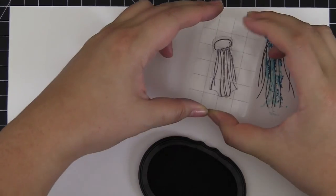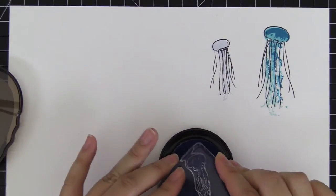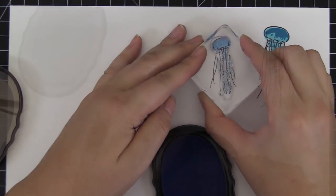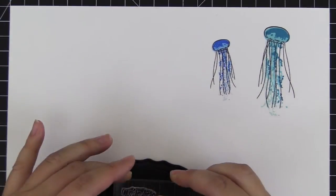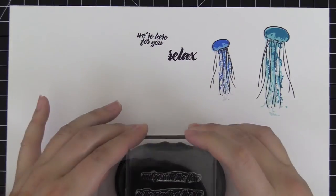This stem set allows you to layer the jellyfish images in various ways, resulting in a stunning project. These images are paired wonderfully with our crisp dye inks for seamless shade layering.